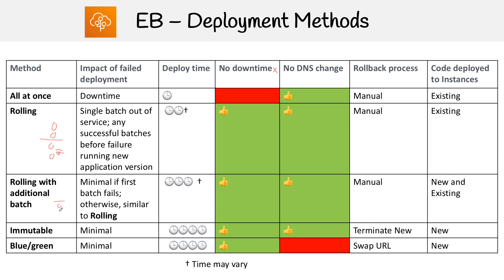Rolling with additional batch is very similar to rolling in that it works in batches, but instead of taking a batch out of service, it adds a new batch first. Once the new batch is running, it kills an old one, so you always have at least the minimum number of servers needed to meet capacity. However, rollback is still a manual process — rolling back each section can be painful, and if part of the rollback fails, you're left with servers in inconsistent states.